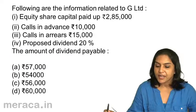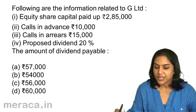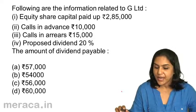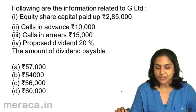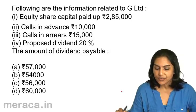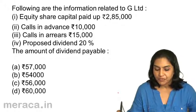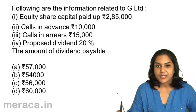Following are the information related to G Limited: Equity share capital paid up — 2,85,000. Calls in advance — 10,000. Calls in arrears — 15,000. Proposed dividend — 20%. The amount of dividend payable: A. 57,000. B. 54,000. C. 56,000. D. 60,000.